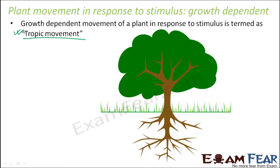In case of animals, the response to stimulus is very instant and that happens due to the presence of the nervous system. When your finger gets into fire, you immediately take it back because you can feel the heat — that is because of your nervous system. But plants do not have any such nervous system. Still, they also respond to stimulus. They respond with movements, and those movements are related to the growth of the plant.